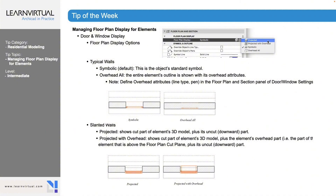All of this can get very confusing to figure out, so I'm going to try to help you understand it today. You can see where symbolic shows the cut of the window, and overhead all shows the entire wall going through with the glazing as dash lines.